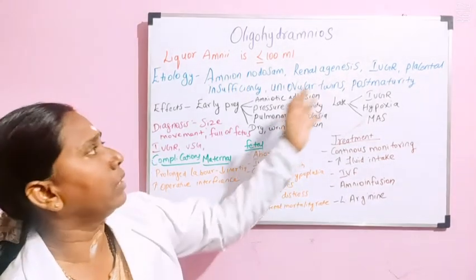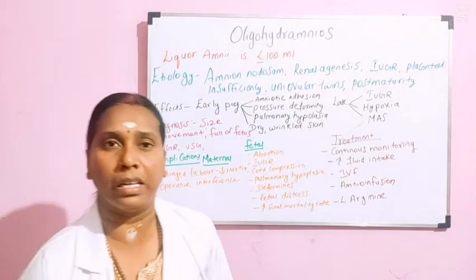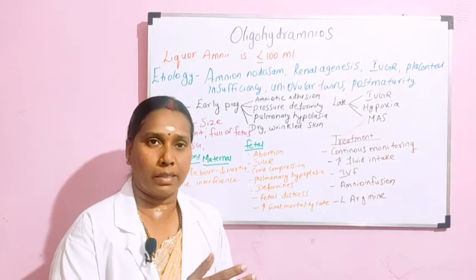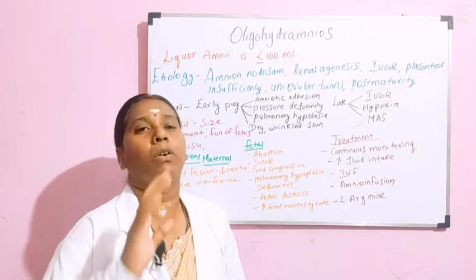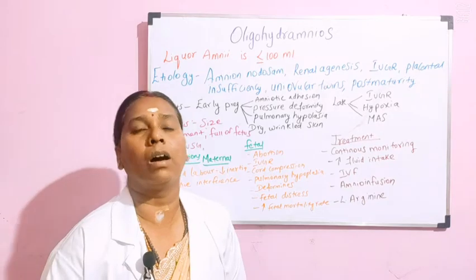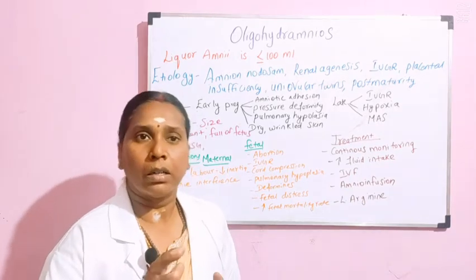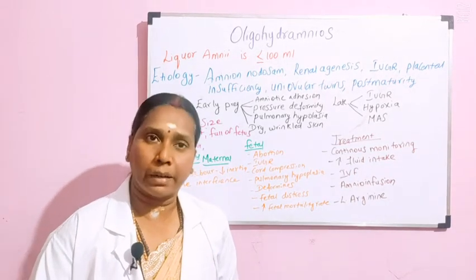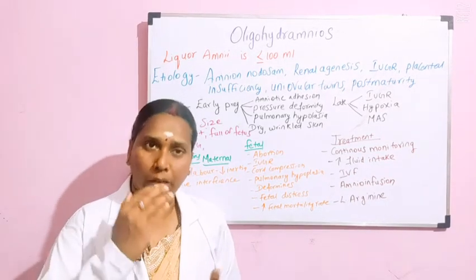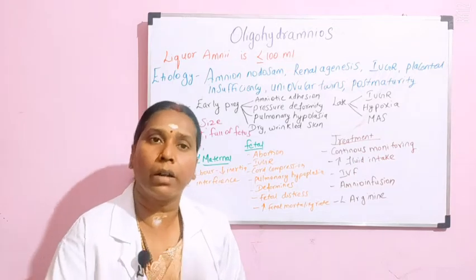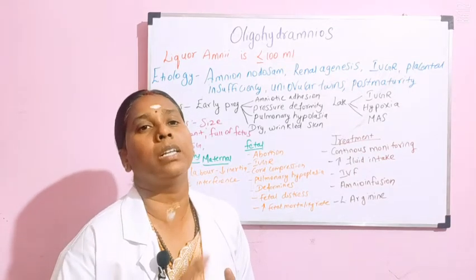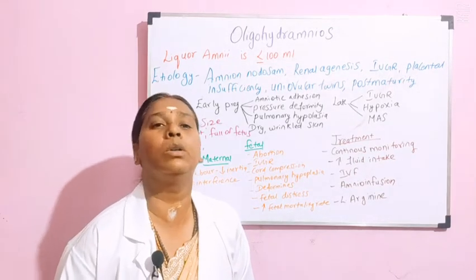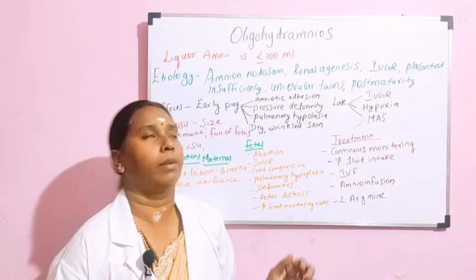The next condition is renal agenesis. Renal agenesis is when the kidneys of the fetus are not functioning adequately — it does not secrete urine, or the micturition is very less — and that leads to oligohydramnios.